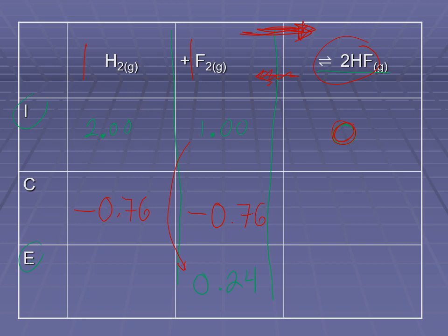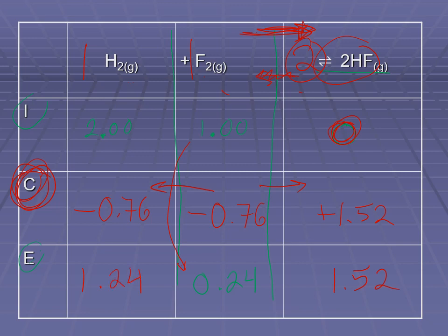Following the mole ratio — which applies to the change row only — the reactants go down by 0.76, and the product goes up by 1.52. If hydrogen fluoride starts at 0 and goes up by 1.52, it ends at 1.52. Hydrogen started at 2 and went down by 0.76, so it ends at 1.24 moles per liter. Those are our equilibrium concentrations. You can write a therefore statement and include the units.